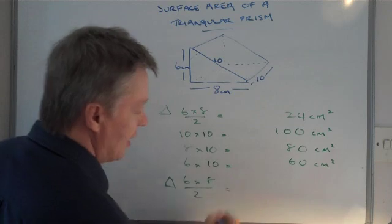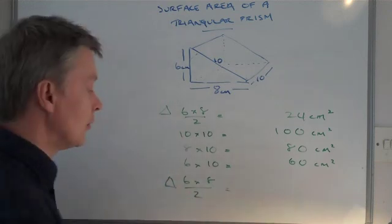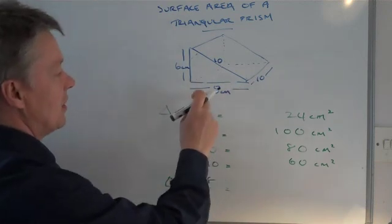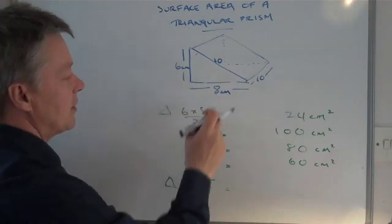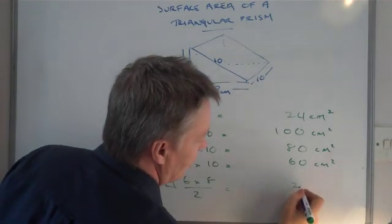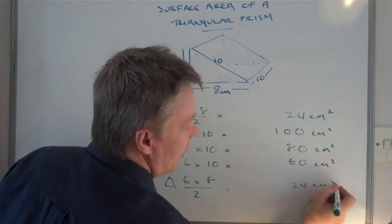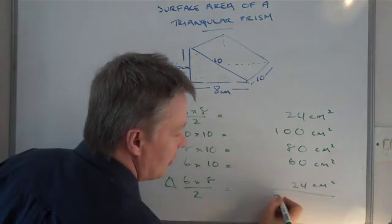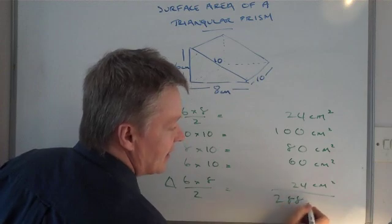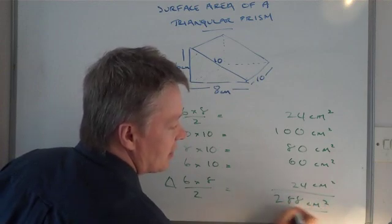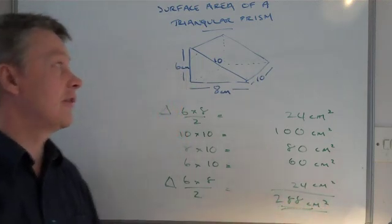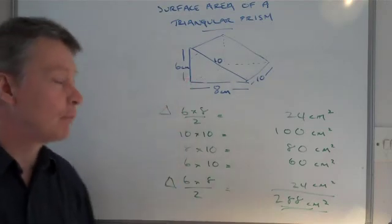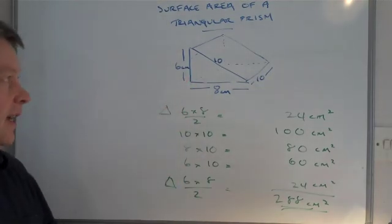It's just a little method to make sure that I've got things in a nice steady order. So 6 times 8 divided by 2 is 24 centimeters squared. If I add that little lot up, it comes to 288 centimeters squared. So the total surface area of this prism is 288.